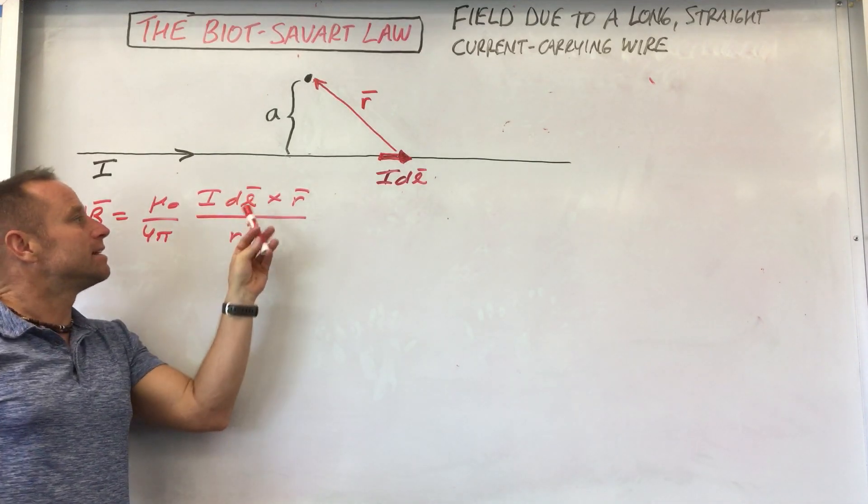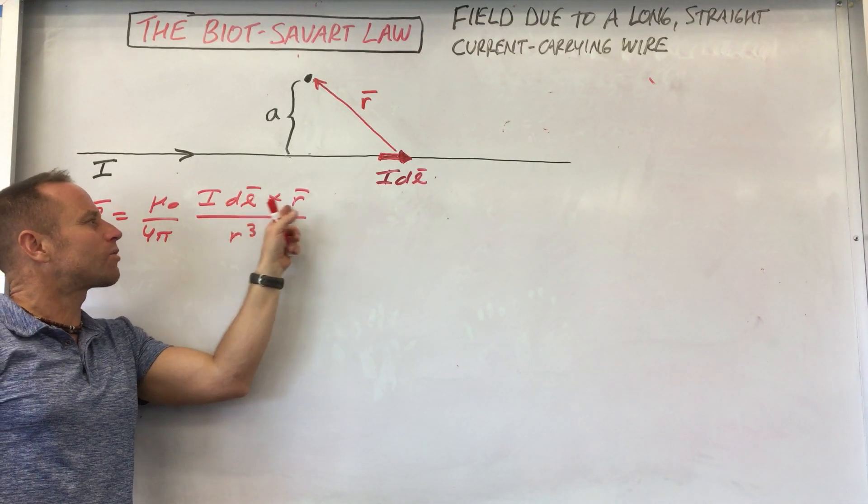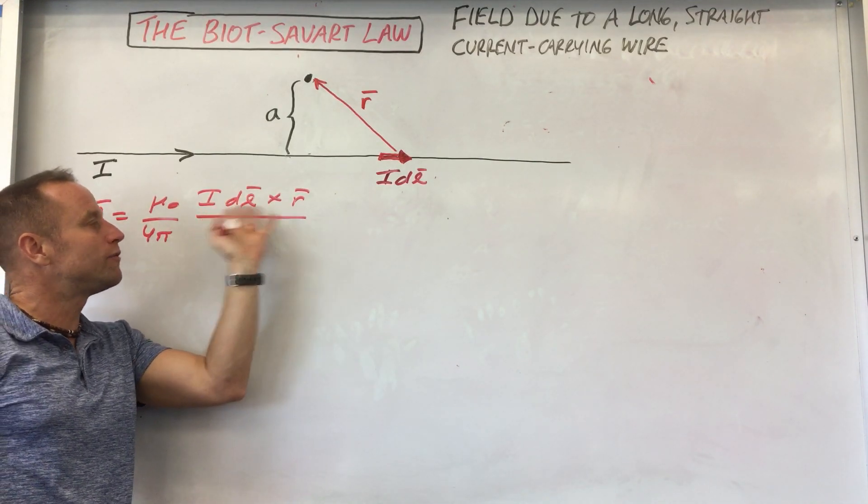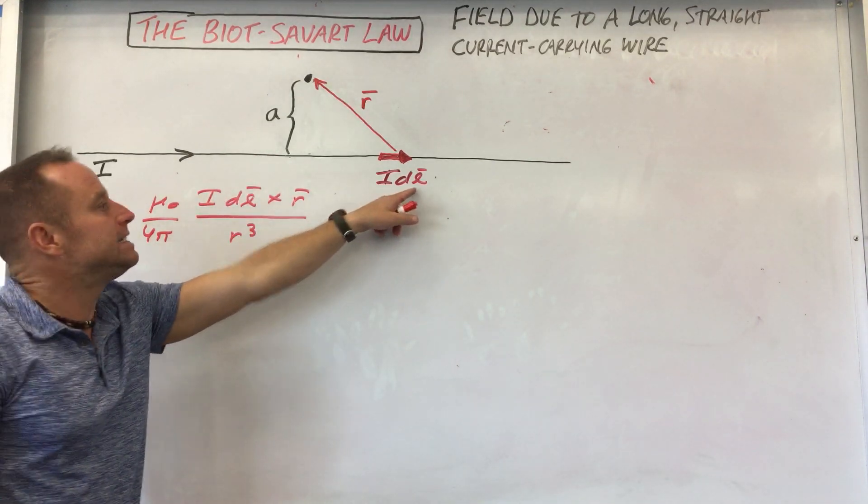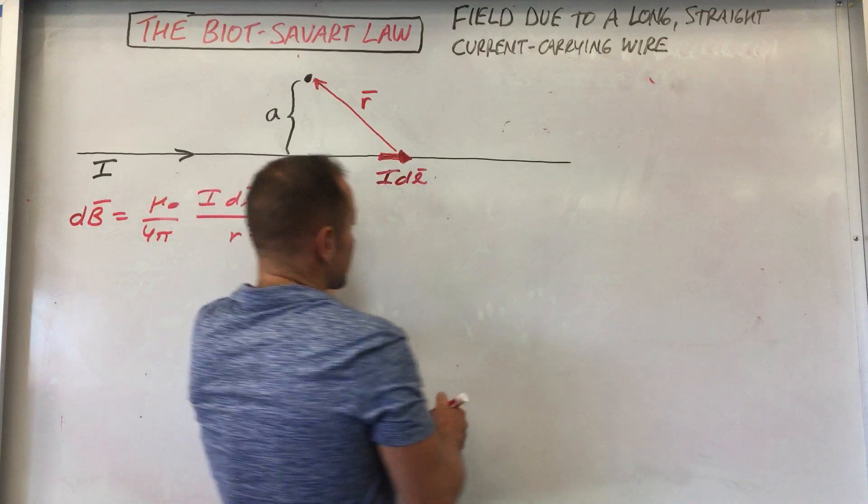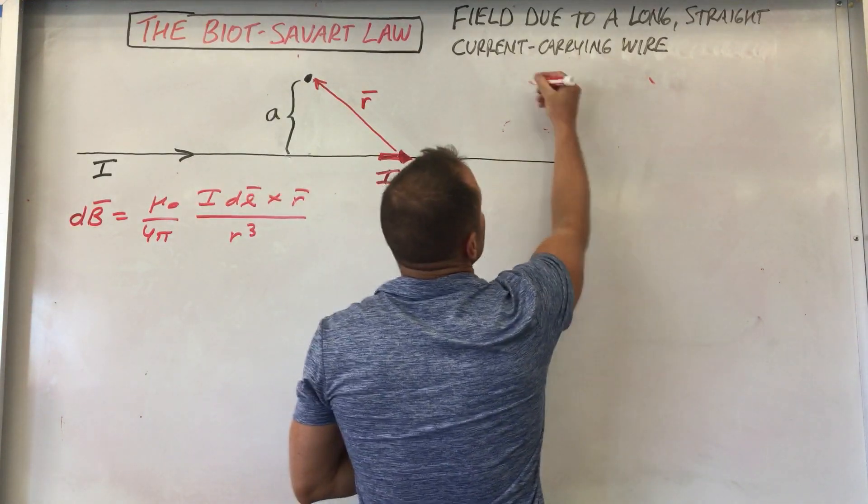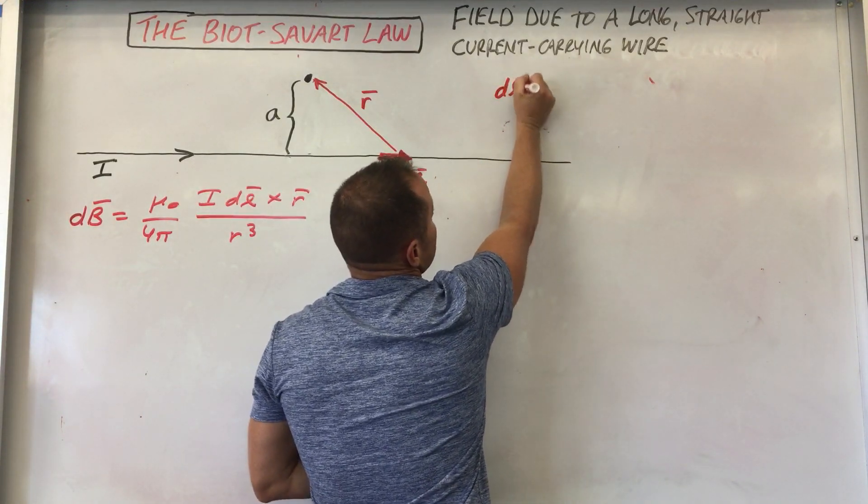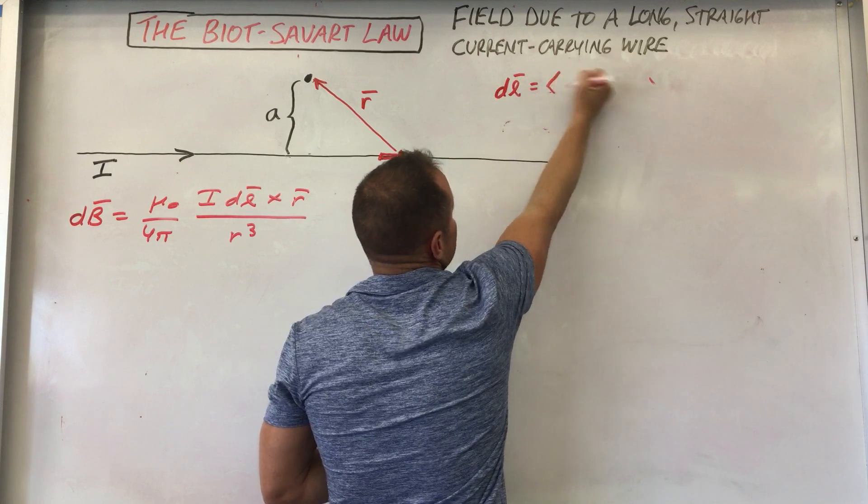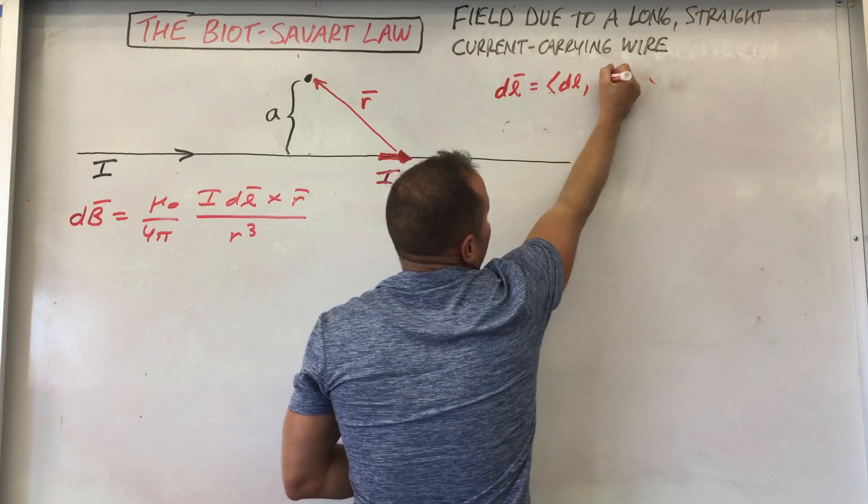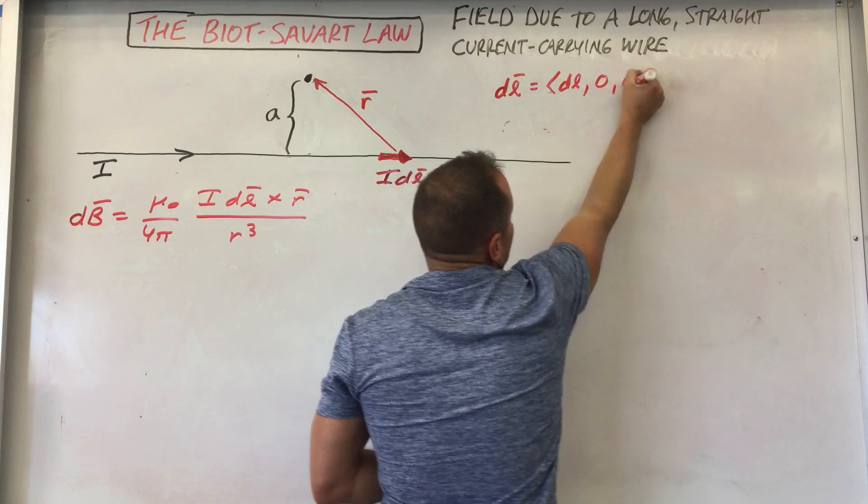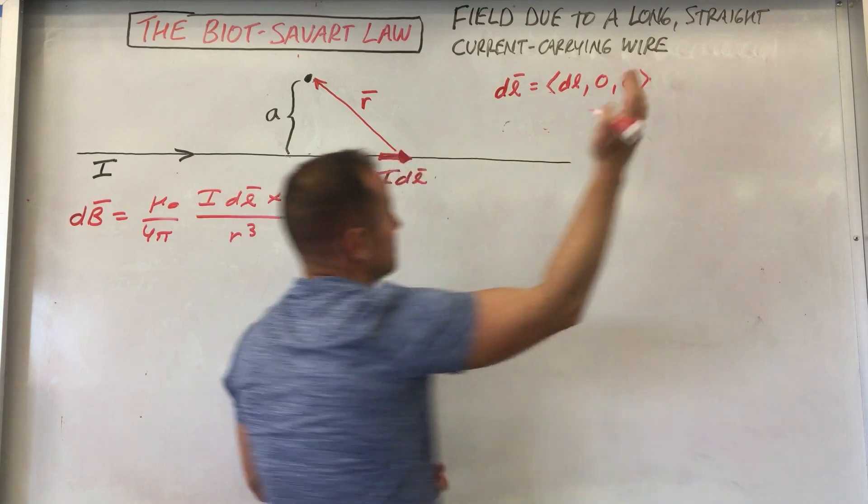What we're gonna do though is just look at how this cross product plays out if you just write down the components of each vector. So DL itself, if you just look at the vector, it's going in the x direction. So I'm gonna put it down as a three component vector. So it's got length DL, it has no Y component and it has no Z component. So there's DL vector.